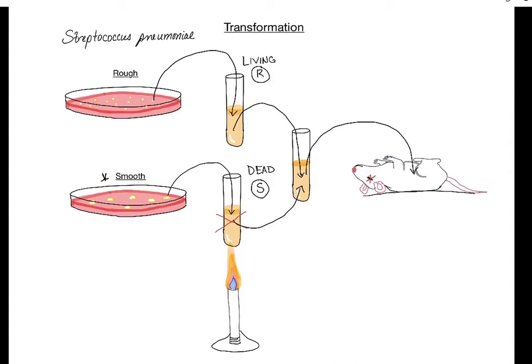He was thinking, wow, that's really weird — independently the mice live, but when I put them together they die. So he decided to take some of the blood from the dead mice and culture it to see if he could find bacteria. Sure enough, bacteria grew — and smooth colonies grew. Frederick Griffith postulated that somehow the rough bacteria must have transformed into smooth bacteria by being in close proximity to the dead smooth cells, incorporating their genetics and becoming smooth themselves, thus causing fatal disease.